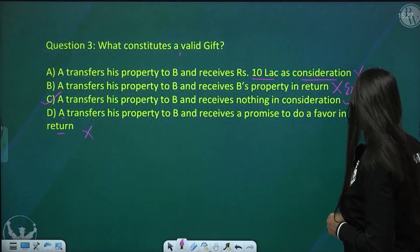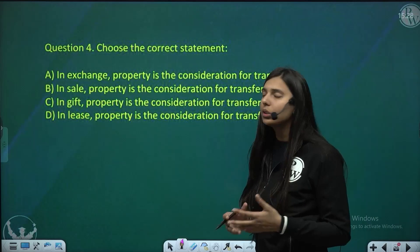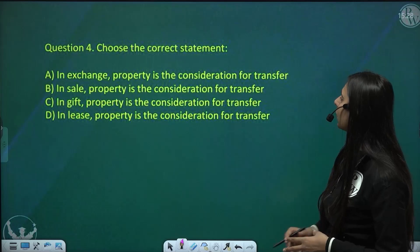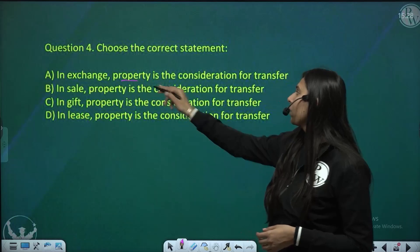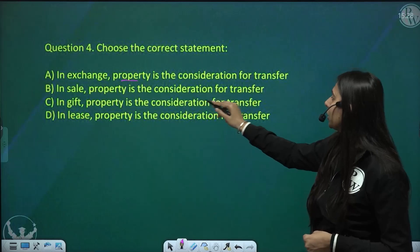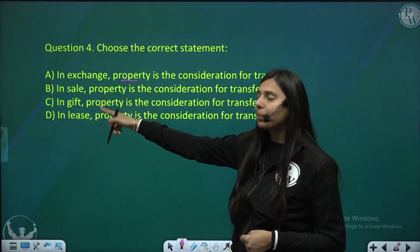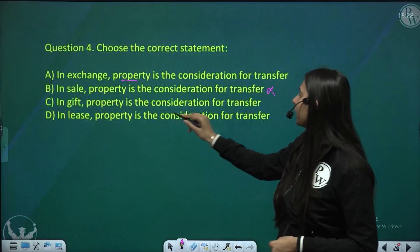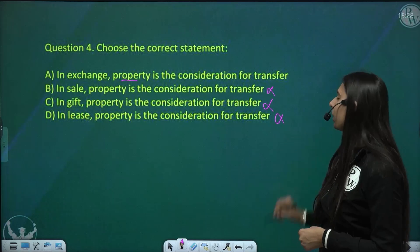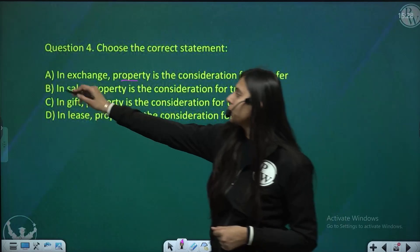Question 4: choose the correct statement. Option A — in exchange, property is the consideration for transfer — this is correct. Option B — in sale, property is the consideration — this is not correct, as in sale consideration is price. Option C — in gift, property is the consideration — not correct. Option D — in lease, property is the consideration — not correct; in lease the consideration is rent. So option A is the correct answer.